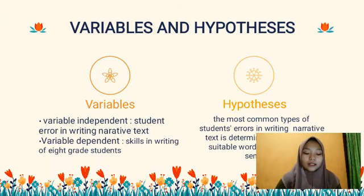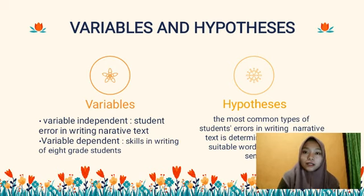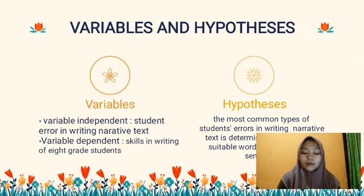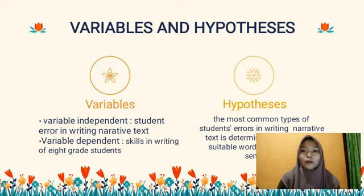Next are variables and hypothesis. The variables include two variables: the independent and dependent variables. The independent variable is the variable that the researcher chooses to study to assess its possible impact. For my research, the independent variable is students' error in writing narrative text. For the dependent variable, it is a variable that the actions affect. For my title, the dependent variable is skills in writing narrative text of the 8th grade students.